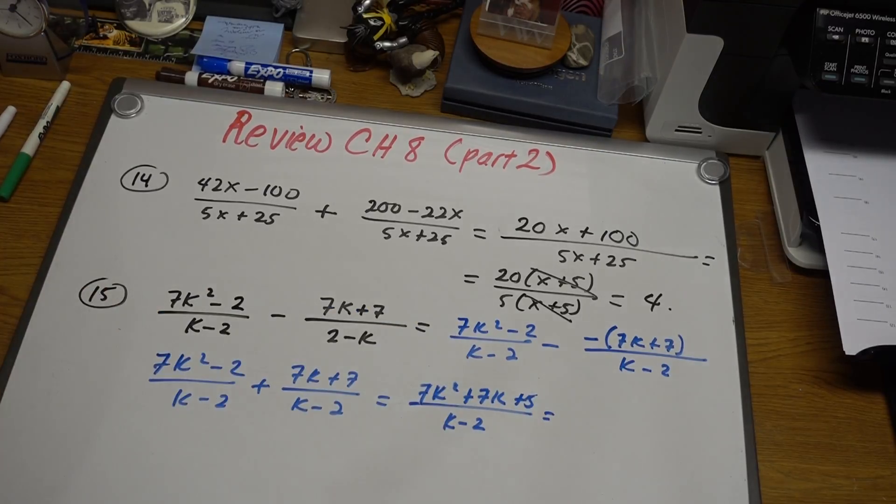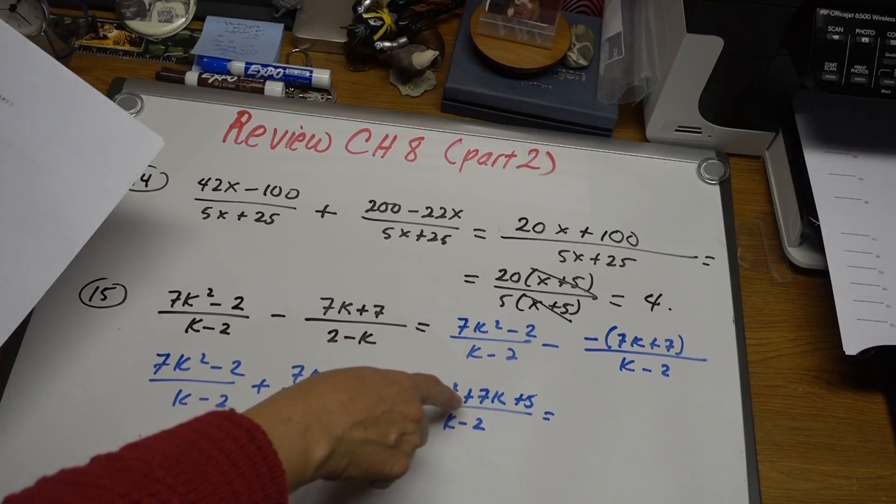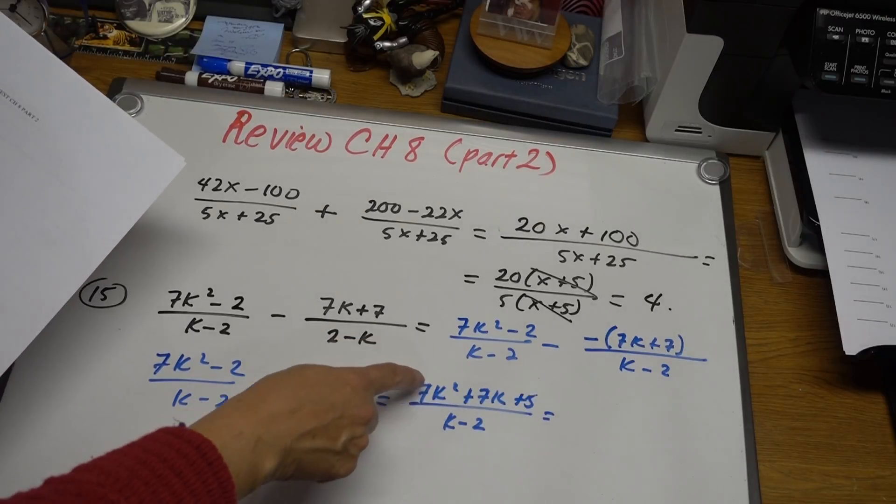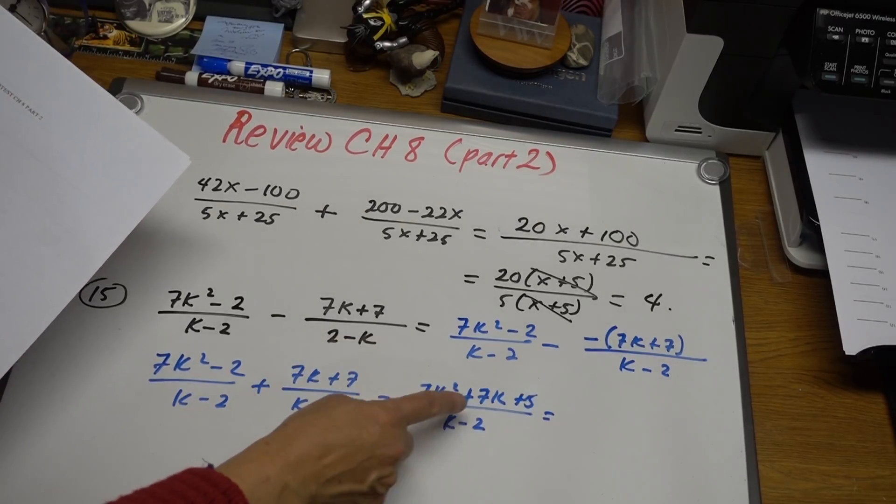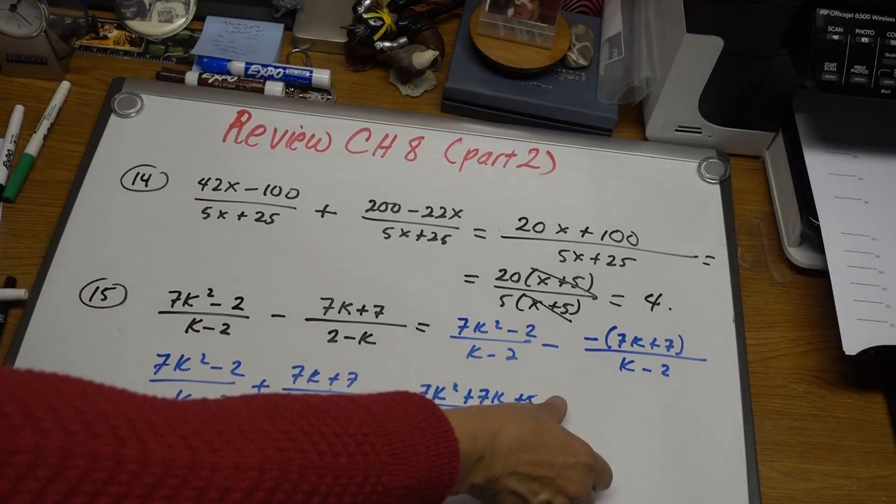Remember, you have the answers in the back. You can always check the answers. I'm checking mine right now, and it is right. I tried to factor it, but this is just 7. When you multiply this 2, it's 35. You're not going to get 7. Okay, so that's the answer for number 15.